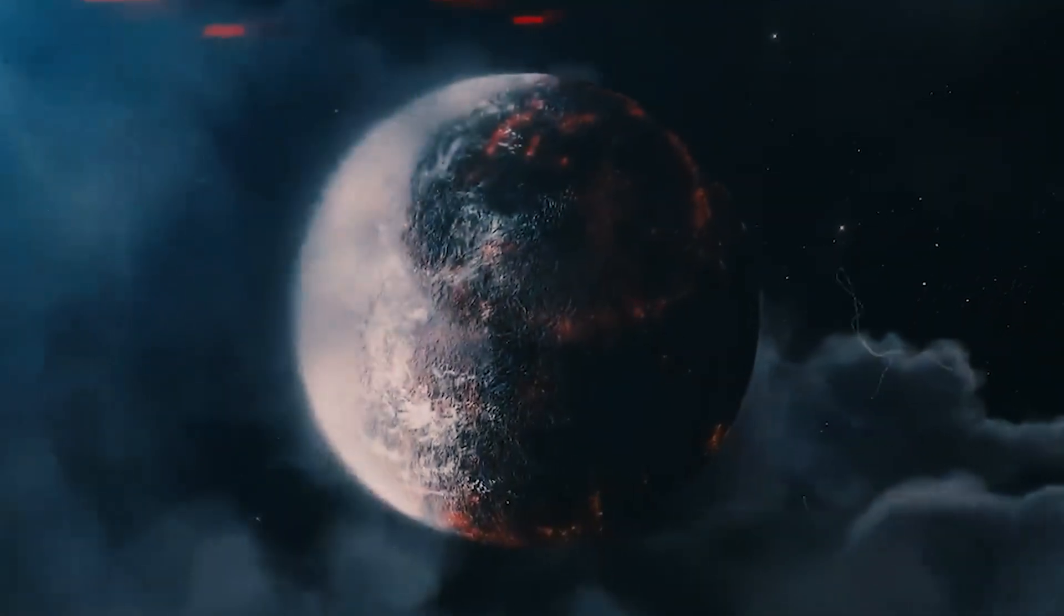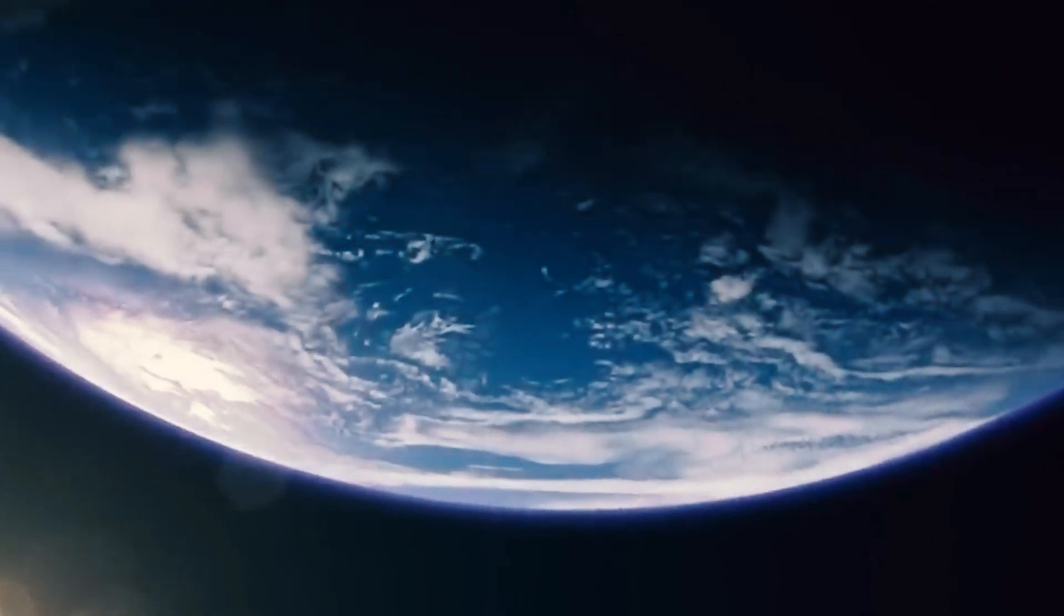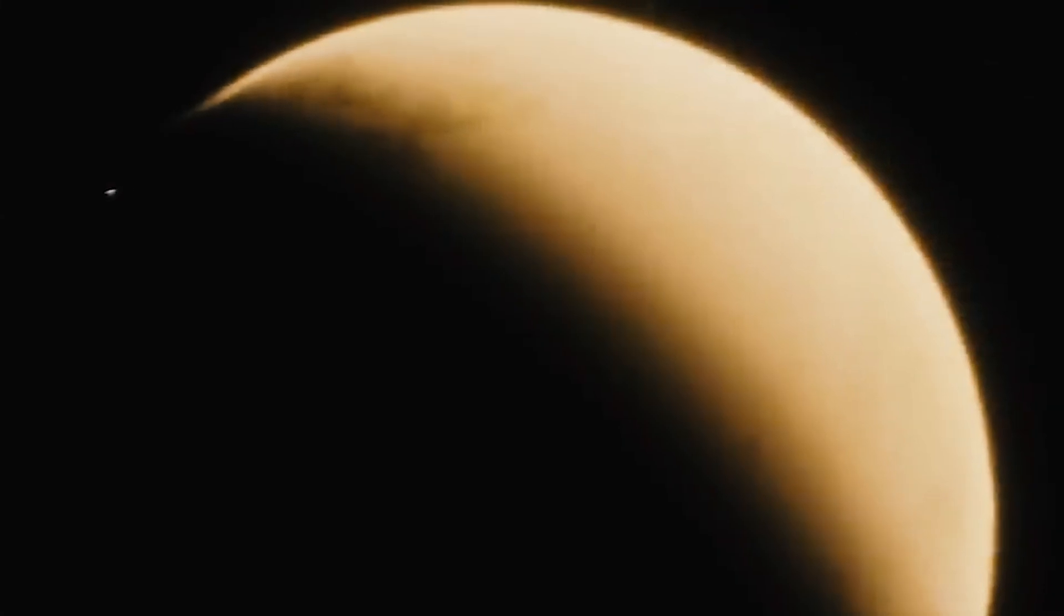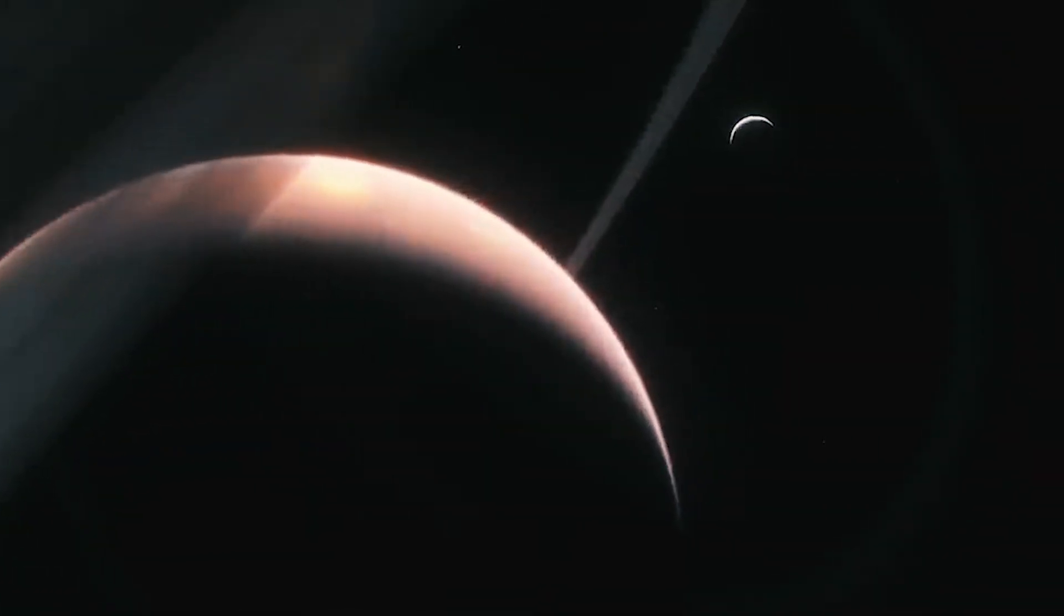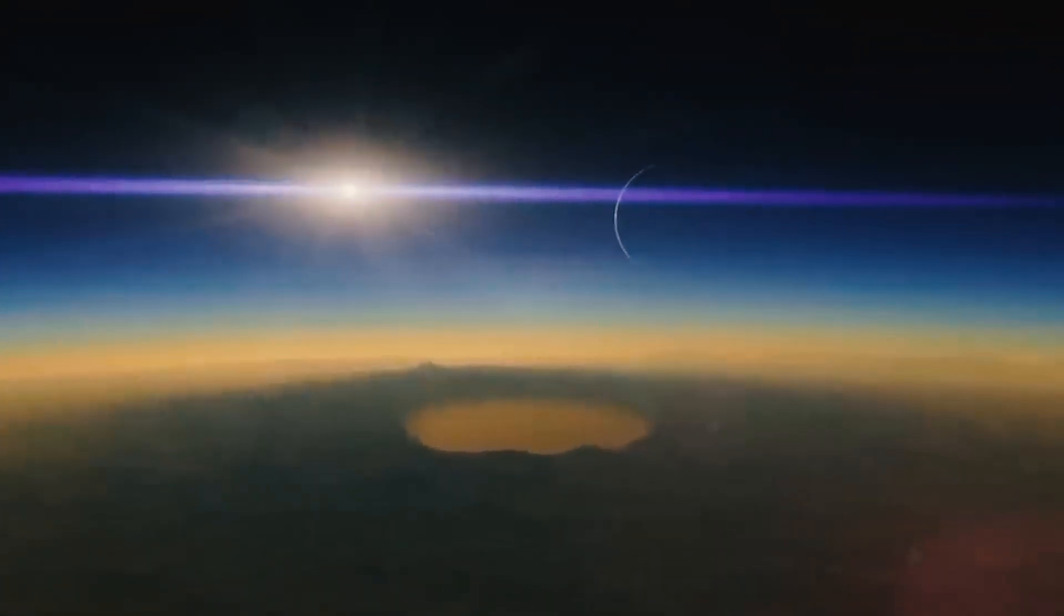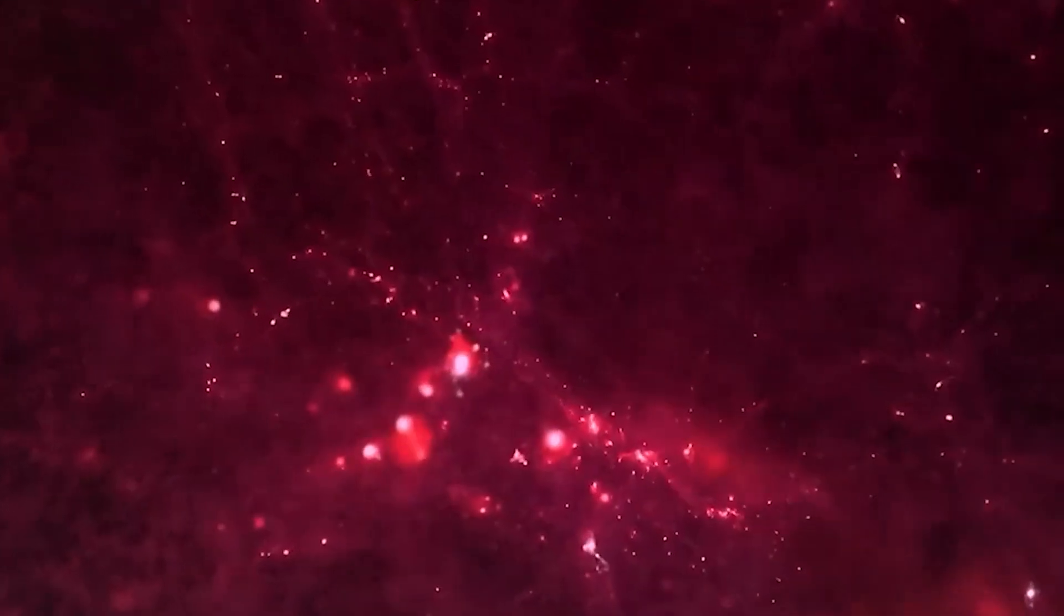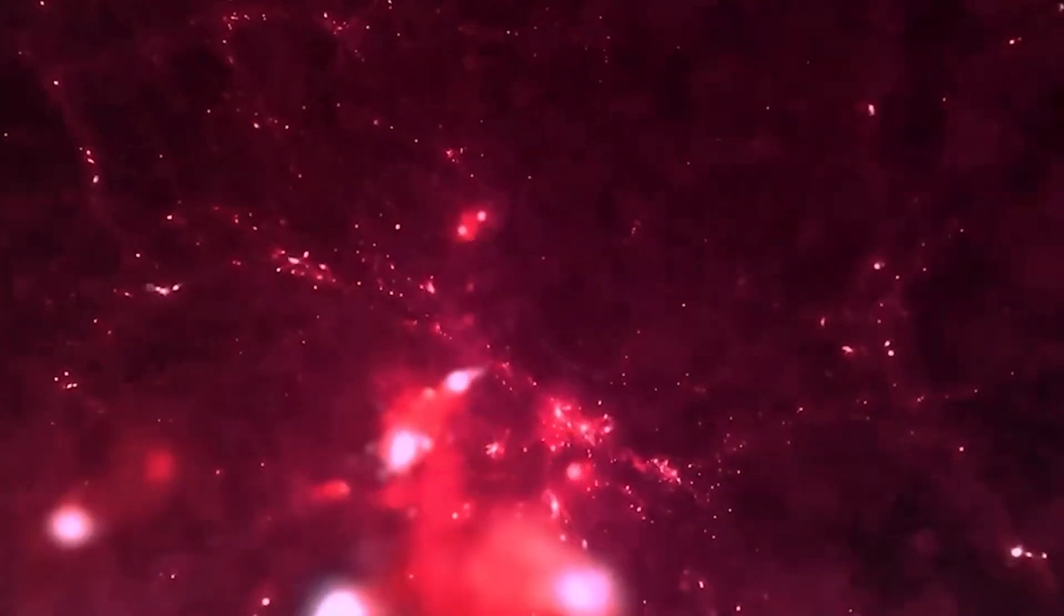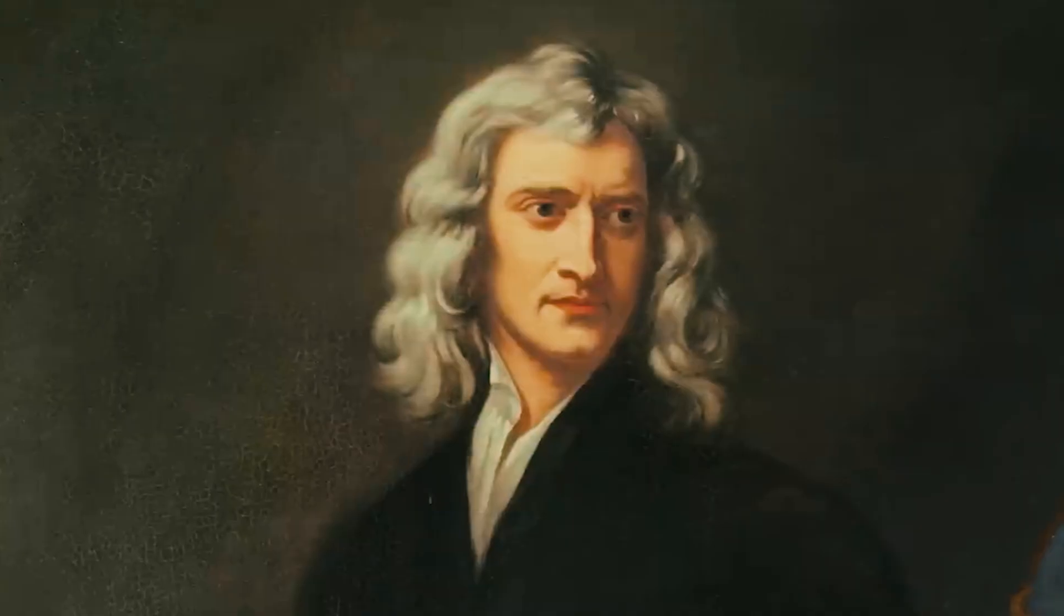For over a millennium, humans held the belief that Earth occupied the central position in the solar system. However, Nicholas Copernicus boldly challenged this notion, proposing that we were just one of many planets orbiting the Sun, offering a simpler explanation for the celestial system. Despite staunch opposition, the geocentric theory gradually crumbled under the weight of evidence, notably from newly developed telescopes. The motion of planets around the Sun found its explanation in gravity, as later elucidated by Isaac Newton.